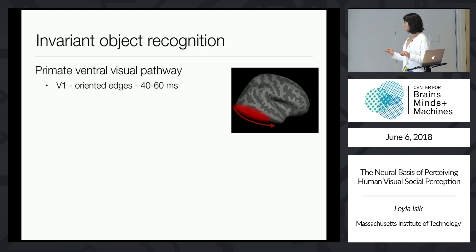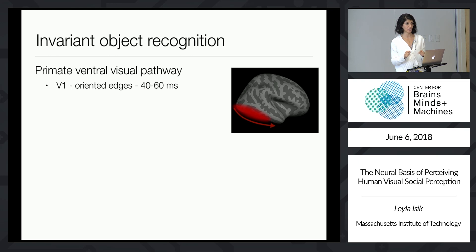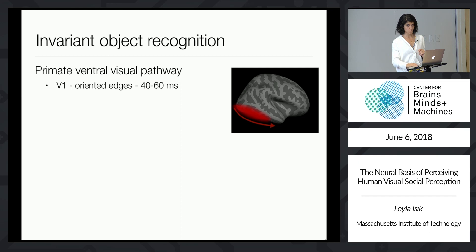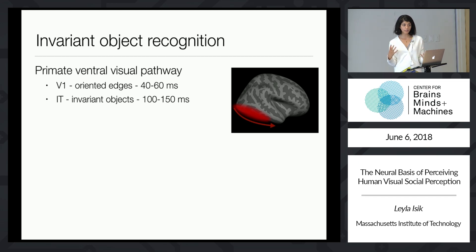We know that the first stage of this hierarchy, which happens at the back of the brain, is primary visual cortex, or V1. Single cells in this layer respond to very specific oriented lines or edges — for example, a 45-degree angle in one position, but not a 90-degree angle or a 45-degree angle in any other position. All the way at the end we have IT, or inferior temporal cortex. Signals reach there about 100 milliseconds later, and at that point they recognize whole objects and are invariant to many transformations.